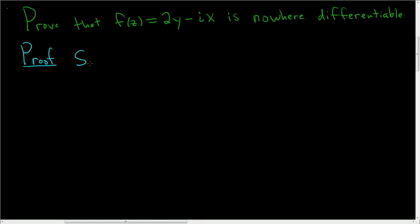So in this problem, we're going to set u of xy to 2y, and v of xy, this is actually negative x. You have to be careful here, negative x. So now we'll compute the partial derivatives and check the Cauchy-Riemann equations.